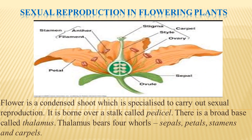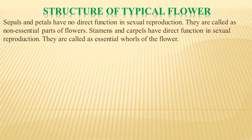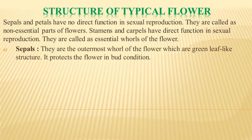This thalamus has four major parts, or four whorls, known as sepals, petals, stamen, and carpel, as you can see in the image. Sepals and petals have no direct involvement in sexual reproduction, so they are referred to as non-essential parts of the flower. Stamen and carpel have direct involvement in reproduction and are referred to as essential parts of the flower, as they are the male and female parts respectively.